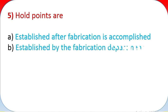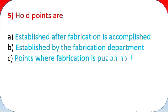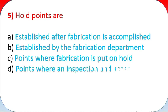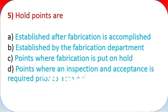Question 5: Hold points are. A: Established after fabrication is accomplished. B: Established by the fabrication department. C: Points where fabrication is put on hold. D: Points where an inspection and acceptance is required prior to accomplishment of any further fabrication.